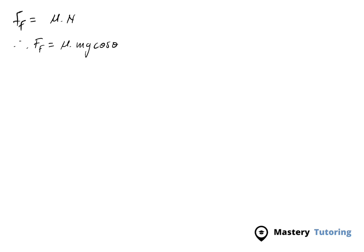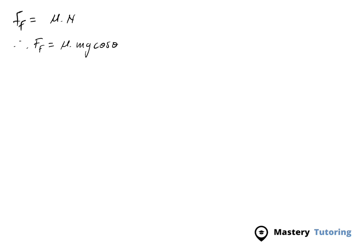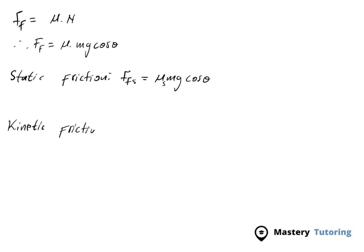There is a difference: when the object is on a horizontal surface, frictional force equals mu times mg. When on an inclined surface, the formula changes to mu times mg cos θ. For static friction on an incline: FF_S equals mu_S times mg cos θ. For kinetic friction on an incline: FF_K equals mu_K times mg cos θ.